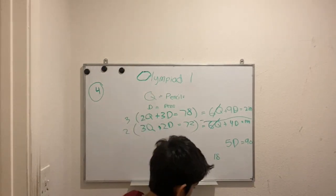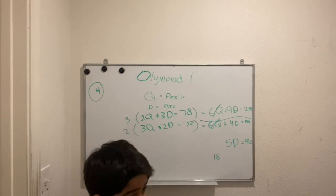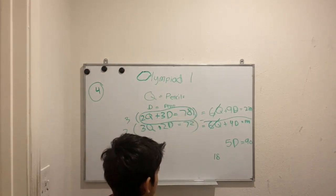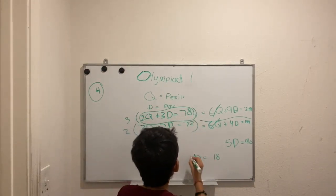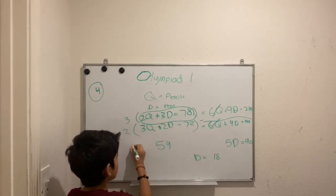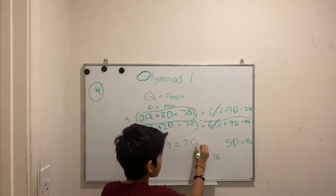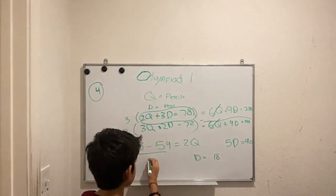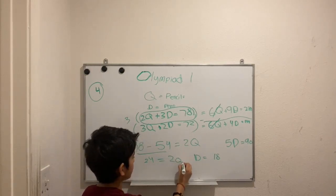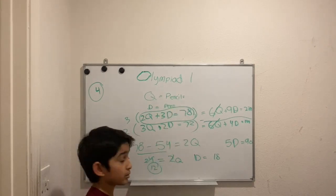We need the cost of a pencil, so we plug d equals 18 into the first original equation. Three times 18 equals 54. Then 2q equals 78 minus 54, which equals 24. Dividing by 2 gives q equals 12, so one pencil costs 12 cents.